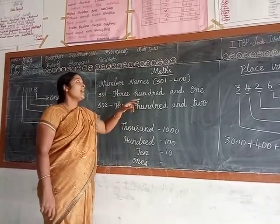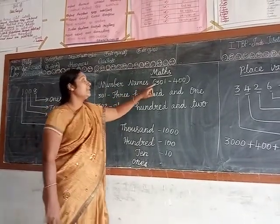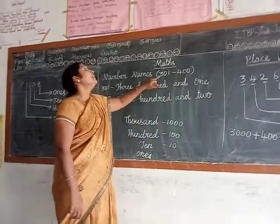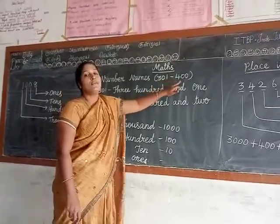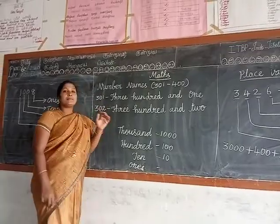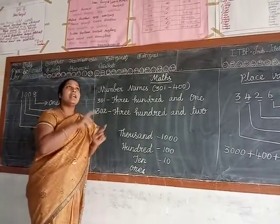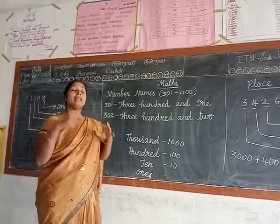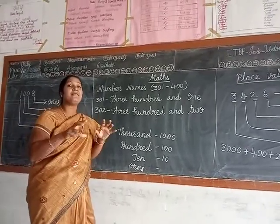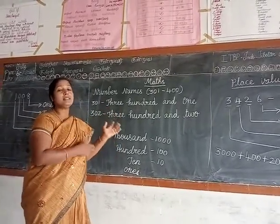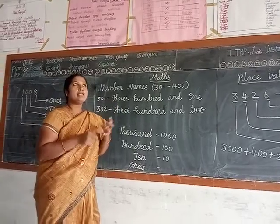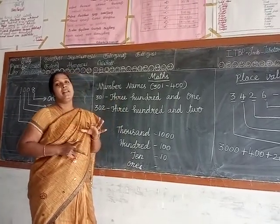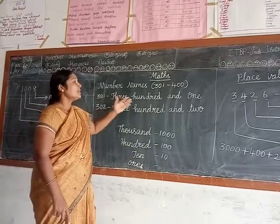In the last video we saw number names from 201 to 300. In this video we will see 301 to 400. You know very well the spelling of 1 to 100. Once you learn 1 to 100, you can write these numbers very easily with the help of those numbers. I hope you understand — then this is also easy.